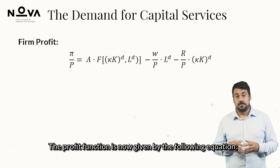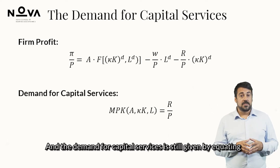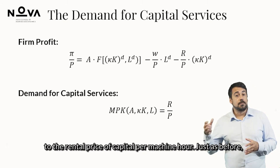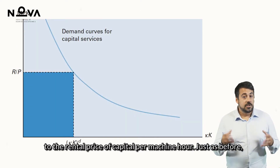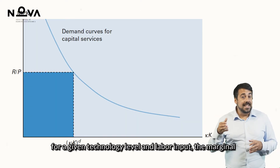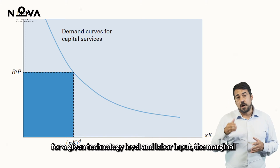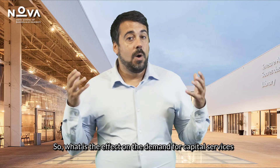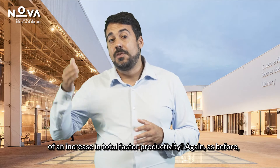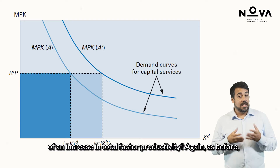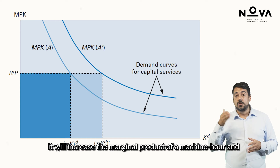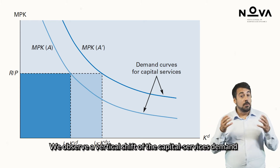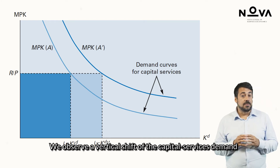The profit function is now given by the following equation. The demand for capital services is still given by equating the marginal product of capital services in machine hours to the rental price of capital per machine hour. Just as before, for a given technology level and labor input, the marginal product of capital services decreases as the quantity of capital services increases. An increase in total factor productivity will increase the marginal product of a machine hour, and therefore demand will rise accordingly.